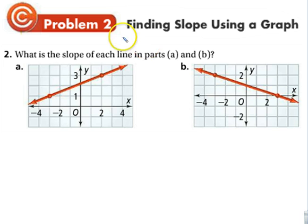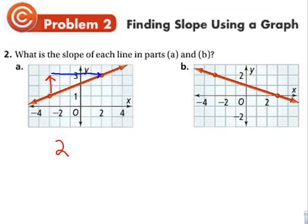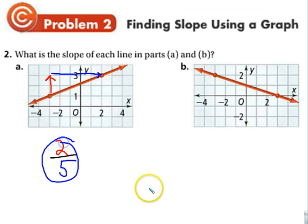Finding the slope using the graph: we look for the distance from one dot to another dot — that's the top number. Then we figure out the horizontal distance for the bottom number. Going up 1, up 2, we put it into a fraction, then move over 1, 2, 3, 4, 5 — so the slope is two-fifths.